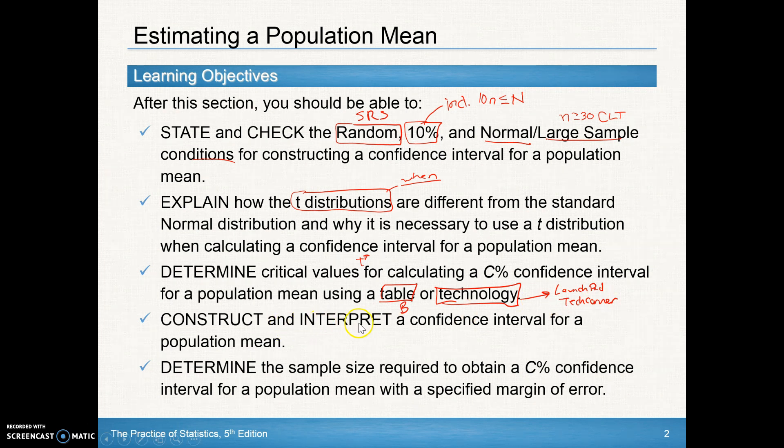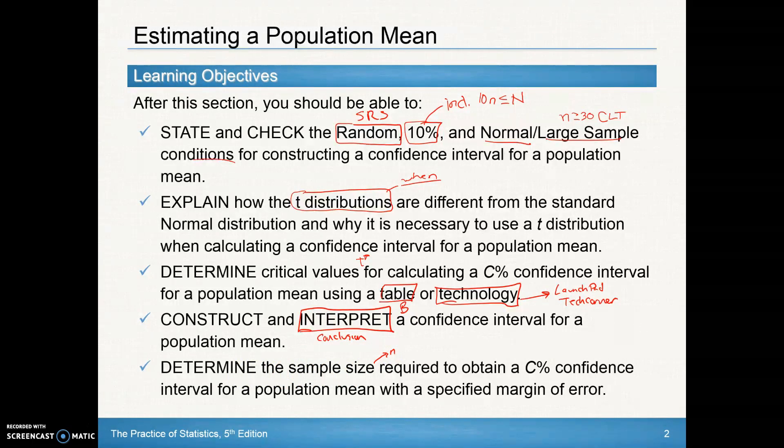We'll construct and interpret, in other words make our conclusion based on a confidence interval for a population mean. And then we'll determine that sample size, determine what is the appropriate n to take for a stated confidence interval and a specified margin of error.